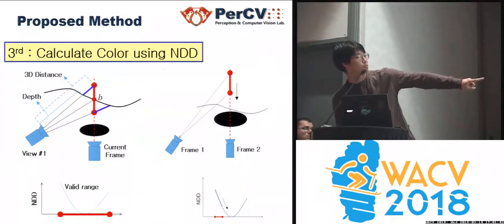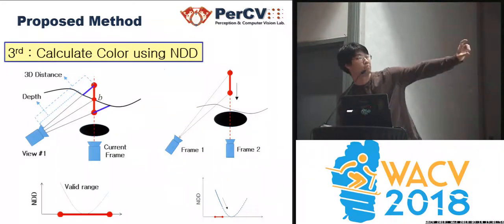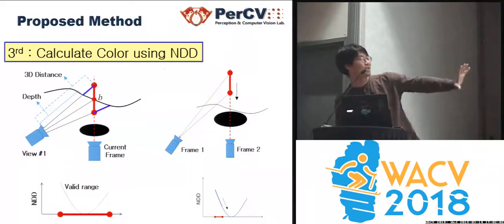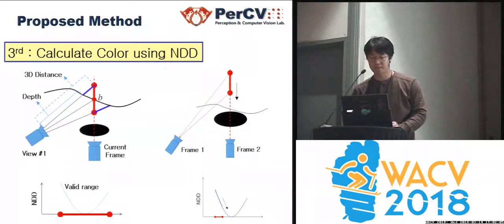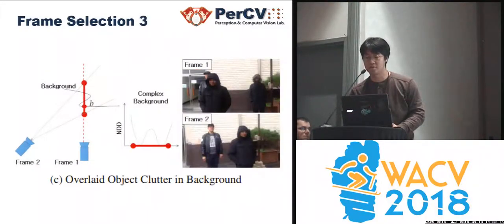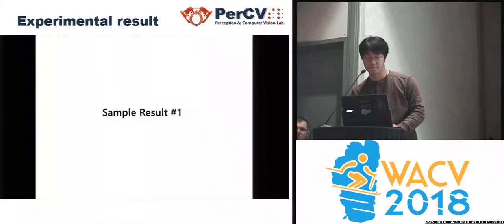If we calculate all NDD values at each frame, we build this kind of graph showing accumulated NDD values. If we have a very good point like B, the graph will have a zero-touching position. If we have a missing location of the ray segment, there is no zero-touching point. So by looking at this graph, we can simply determine if a frame is good or not. This frame selection process is explained in the poster. Throughout this frame selection, we can discard frames that contain low quality points.